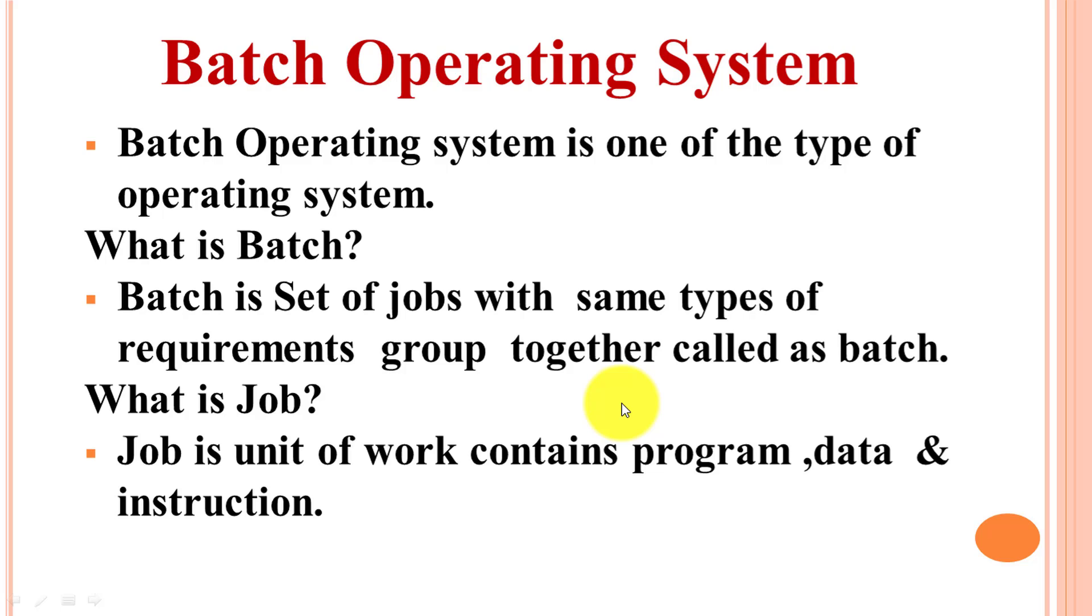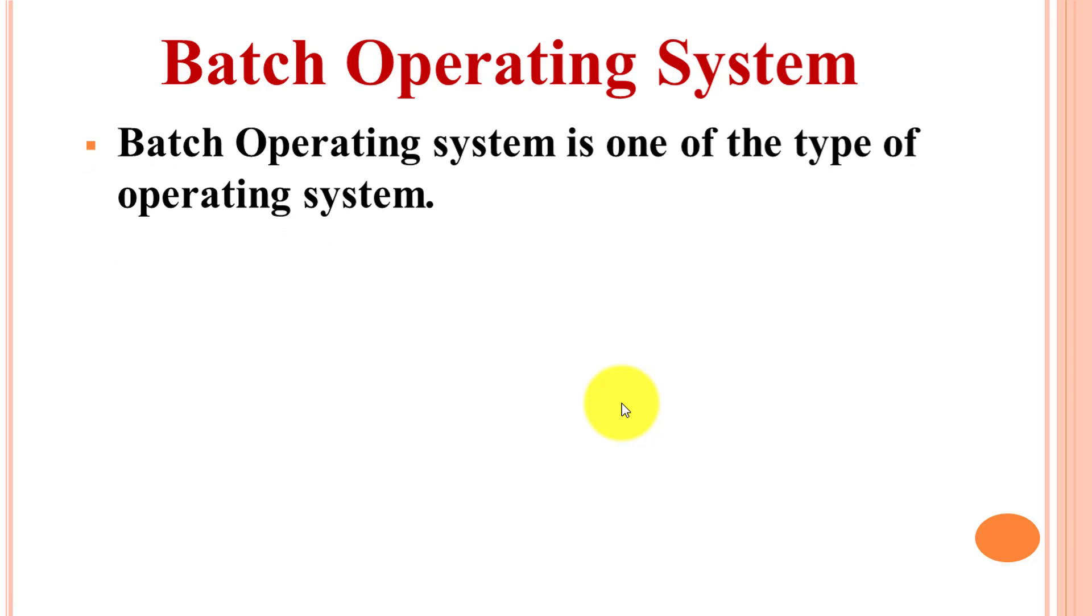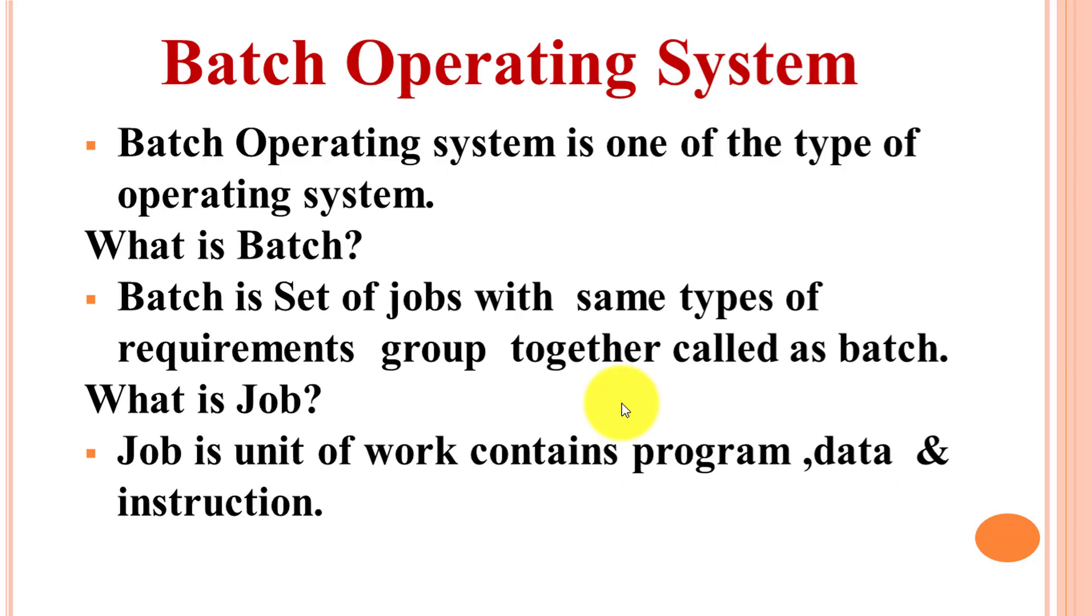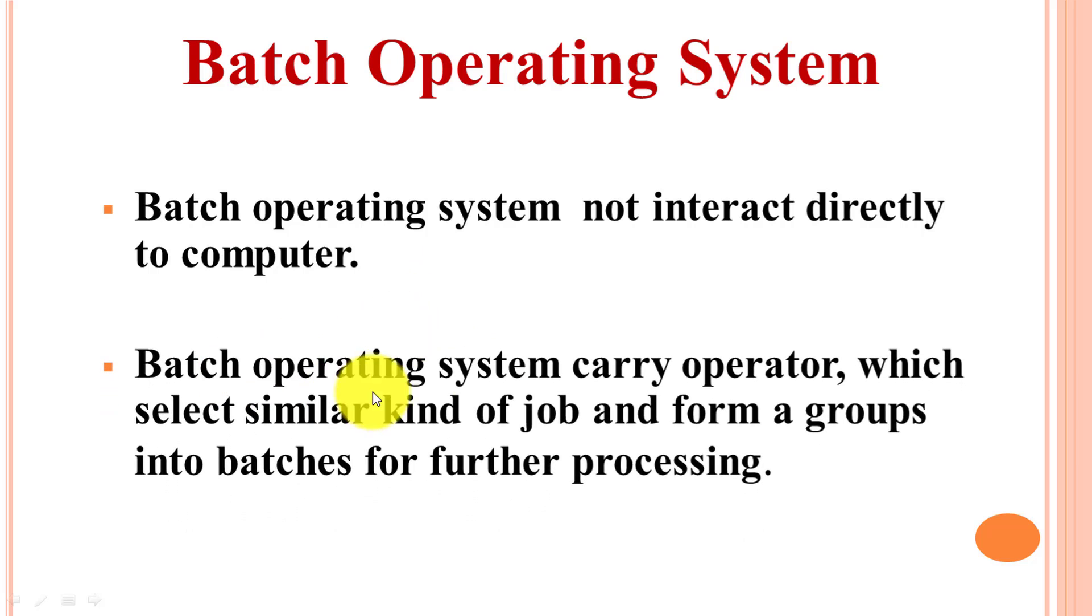Now let's understand how batch operating system works. Batch operating system does not interact directly to computer. That means batch operating system does not communicate directly to CPU. Batch operating system has an operator which selects similar kinds of jobs and forms groups into batches for further processing.